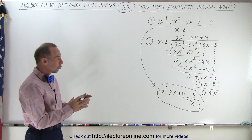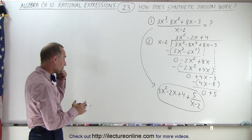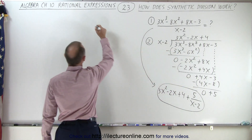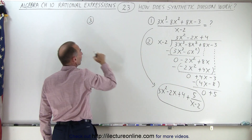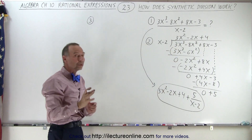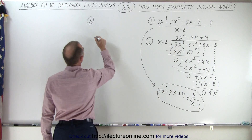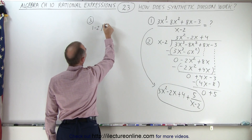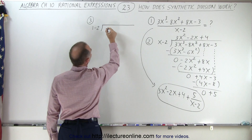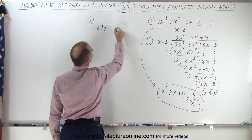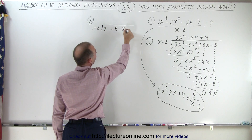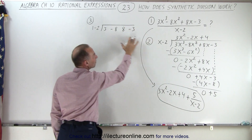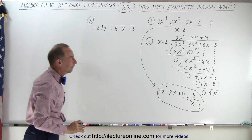So now we're going to show you how synthetic division works by first doing the exact same thing — we'll call that step number 3 — but instead of using x's, we're only going to show the numerical coefficients. So we end up with 1 minus 2 dividing into 3, minus 8, positive 8, and minus 3. It looks exactly the same, except we don't have any of the x's.